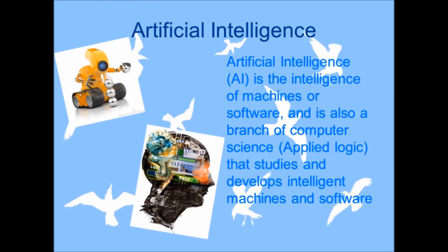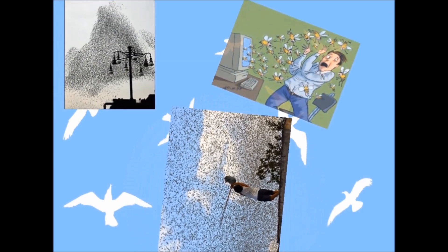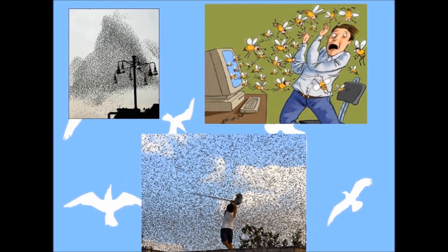Swarm Intelligence is a field of artificial intelligence. Artificial intelligence is the intelligence of machines or software and is a branch of general computer science that studies and develops intelligent machines and software. I believe everyone knows what a swarm is, but just to clarify things, I will give you the term from Wikipedia.